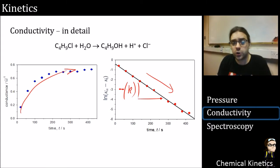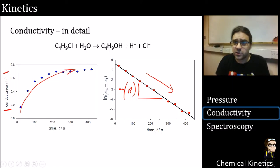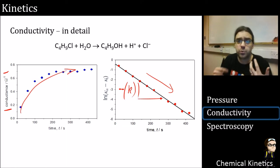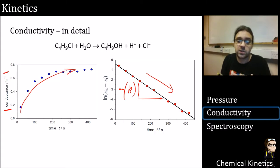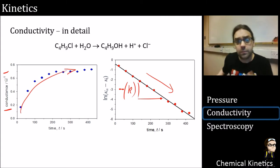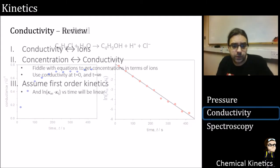What we're trying to show here is that we don't necessarily need to plot concentration directly. We can just find something that concentration is directly proportional to. Pressure is the same, conductivity is the same, and when we move to spectroscopy, we'll see that absorbance can be used as the same thing as well.